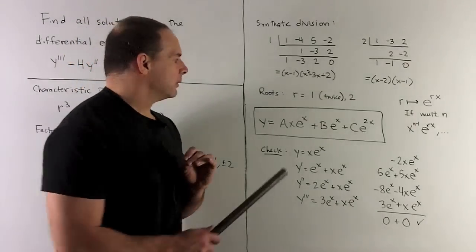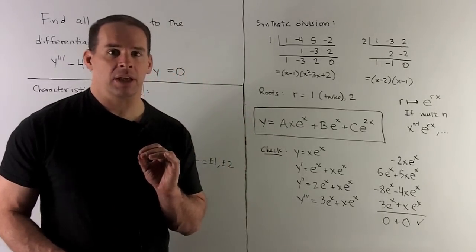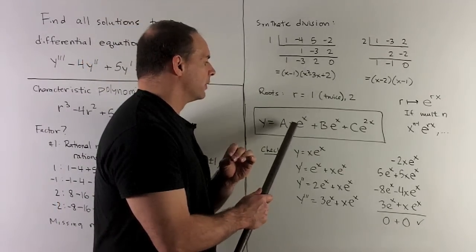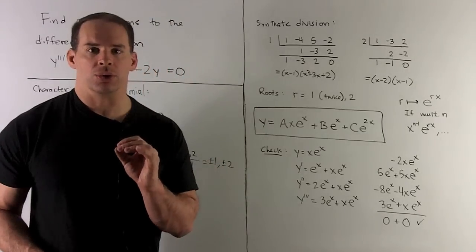So here, our multiplicity is a 2, so I have to throw in, we'll have e to the x, but then I have to take 1 down from the multiplicity, which is a 1. So we have constant x e to the x. Then going down by 1 just gets me a b e to the x. So those are all our solutions.